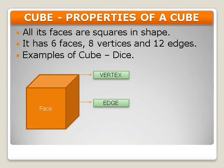Now in this slide you can see a cube. Properties of a cube are: all its faces are square in shape. It has six faces, eight vertices, and twelve edges. An example of a cube is a dice, which we use while playing Ludo or Snake and Ladders.